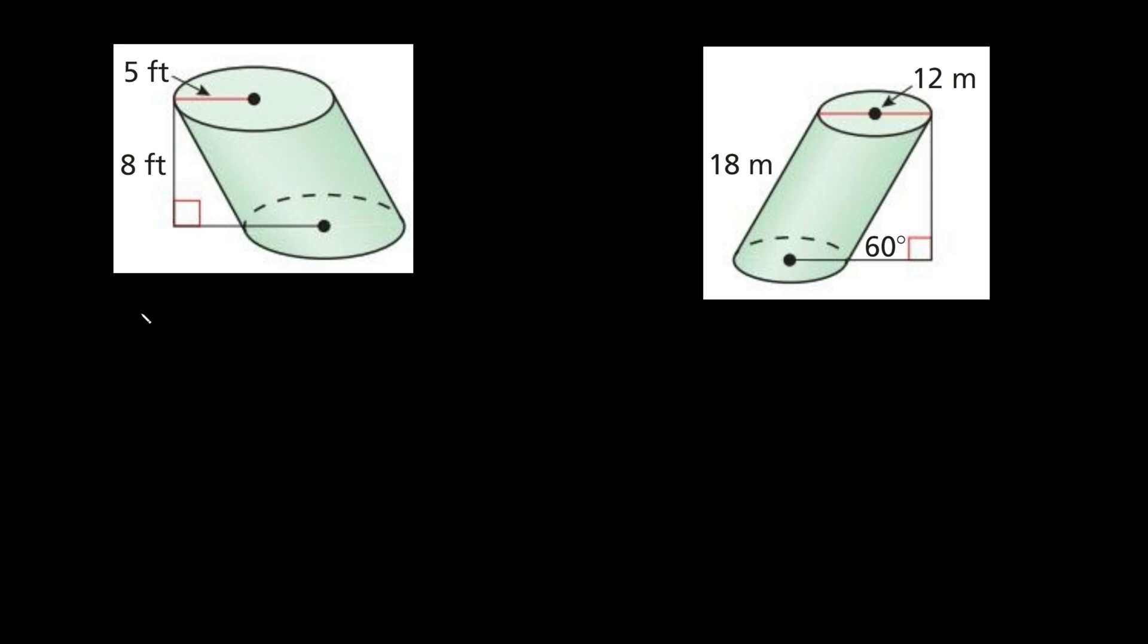The formula to find the volume of a cylinder or an oblique cylinder is the same. It's just going to be V equals pi R squared times H. V is the volume, R is the radius, and H is the height.